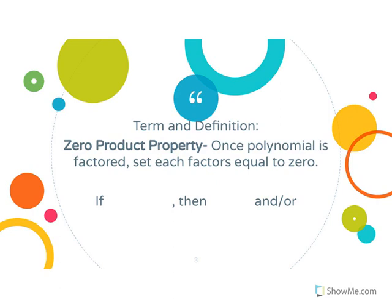The first term and definition is zero product property. Its definition is: once a polynomial is factored, you're going to set each factor equal to zero. If A times B equals zero, then A equals zero and/or B equals zero. When doing the factoring method, you will have to set both equal to zero and solve for x.